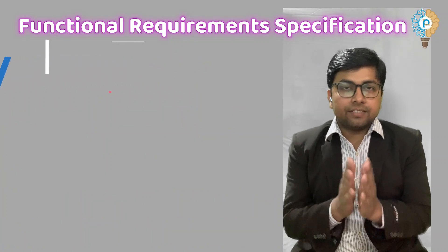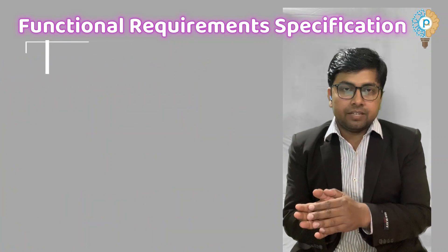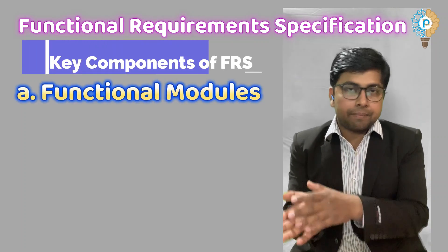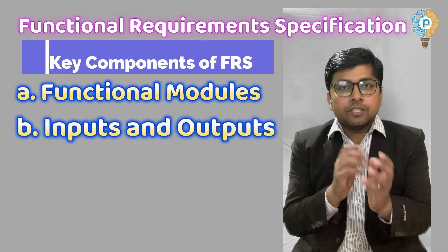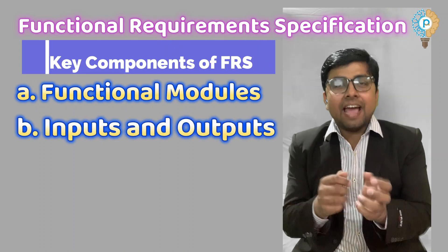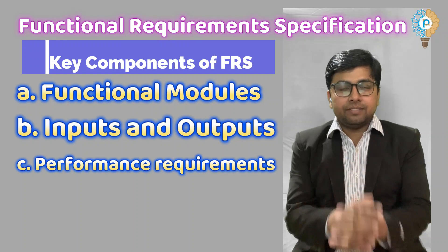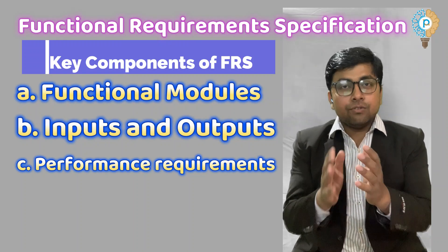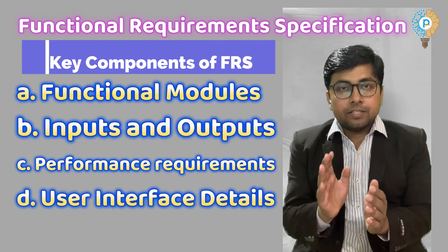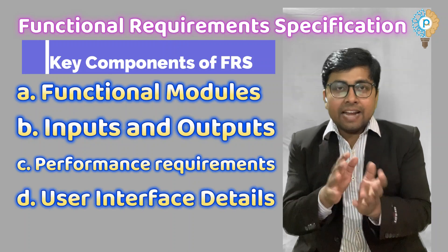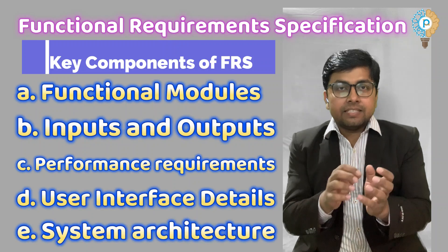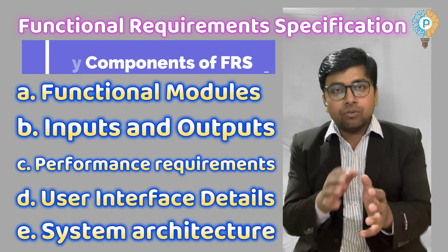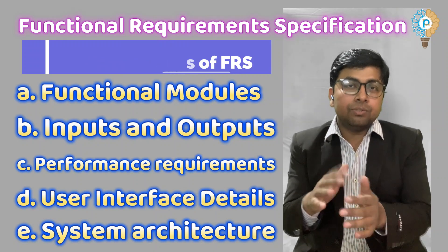The key components of functional requirement specification are: First, functional modules — a detailed description of system capabilities. Next, inputs and outputs — specification of data handling and processing. Third, performance requirements — expectations of system responsiveness and reliability. Fourth, user interface details — specification of screens, controls, and navigation. Last, system architecture — defines the outline of the framework and how the system or client will interact with the server.